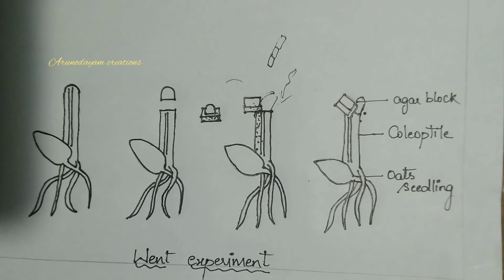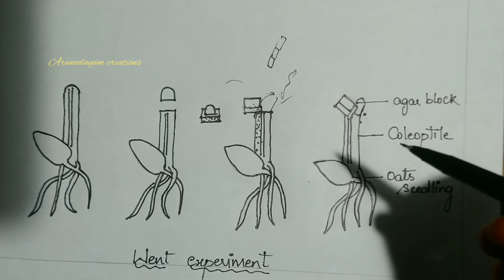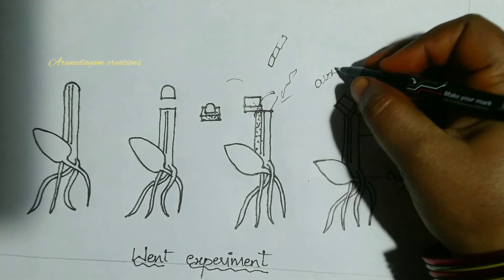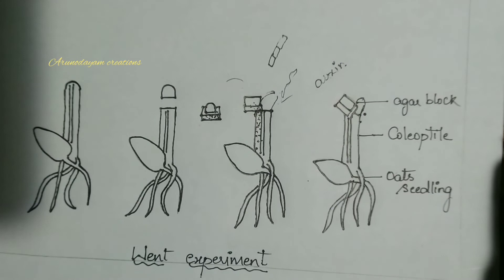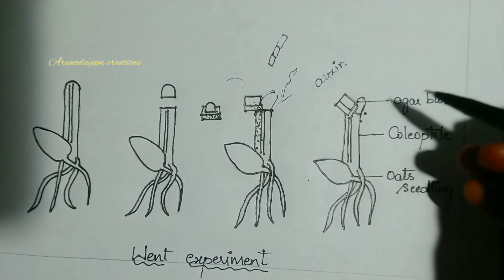He was able to separate or extract that substance, and he named that substance. He named it as auxin. Auxin is a plant hormone. In Greek language, auxin means to increase - here, the cells increase through cell elongation.